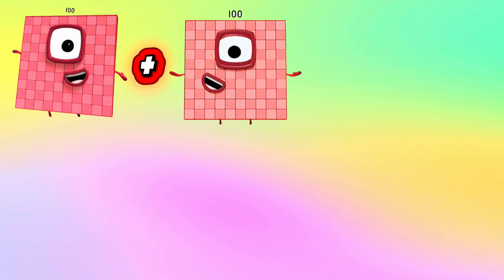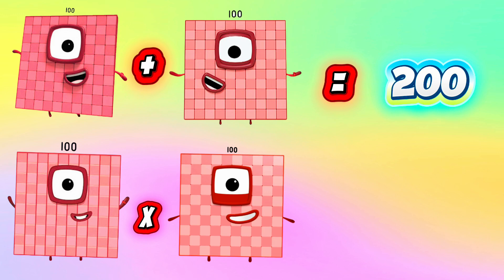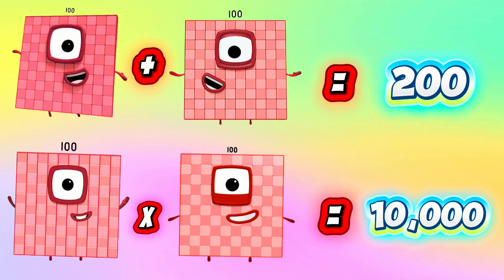100 plus 100 equals 200. In multiplication, 100 multiplied by 100 equals 10,000.